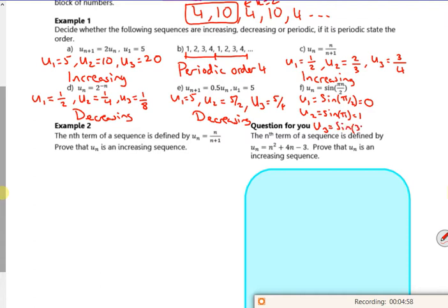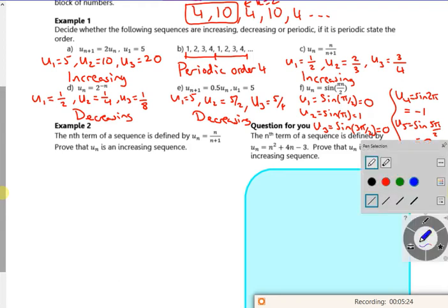U3 is sine of 3 over 2 pi, which is minus 1. U4 is sine of 2 pi, which is 0. And then u5 sine of 5 pi over 2, that returns to 1. So what I've got is my numbers repeat once I've got to u4.